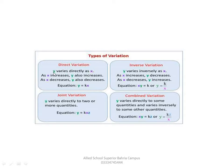What is direct variation? If Y varies directly as X — Y varies with X — as X increases, Y also increases. If X increases, Y increases. If X decreases, Y decreases as well. A direct relationship can be found between them.